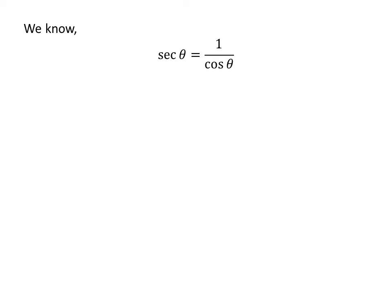We know secant of theta is equal to 1 upon cosine of theta. So, the application of the above identity gives us secant of half of pi plus x is equal to 1 upon cosine of half of pi plus x.